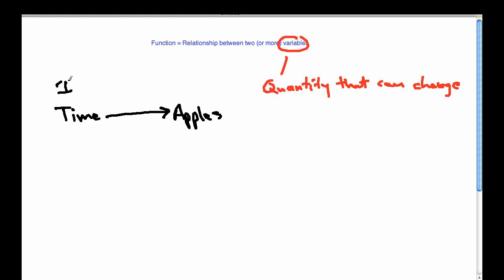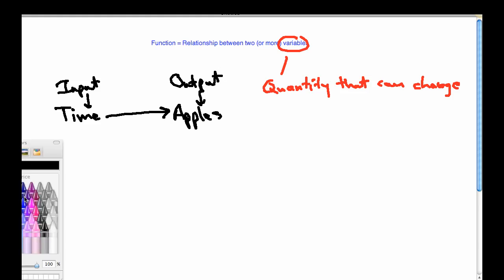If I feed it an input, like a time value, I can do some sort of process and come up with an output. And the means by which I get my output for my input, that's what my function is, whatever I choose.